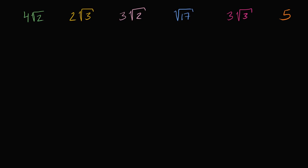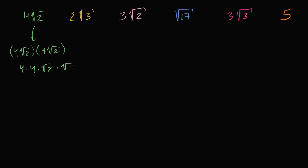I'm just going to square each of these. If I take four square roots of two to the second power, that's four square roots of two times four square roots of two. You can change the order of multiplication — that's four times four times the square root of two times the square root of two. Four times four is 16, and square root of two times square root of two is two. So it's 16 times two, which equals 32.